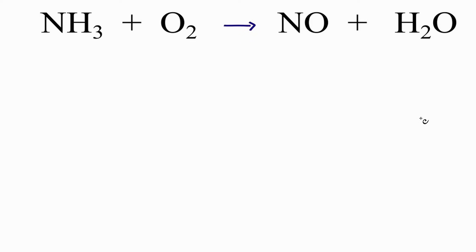Let's balance NH3 plus O2 yields NO plus H2O. First thing to do is add up the atoms on each side of the equation.